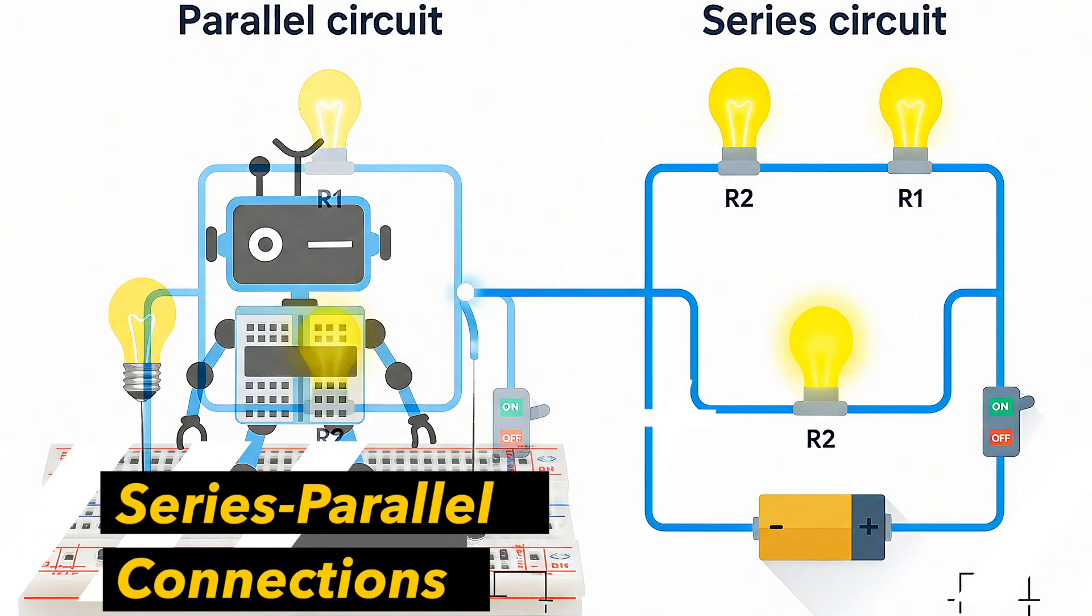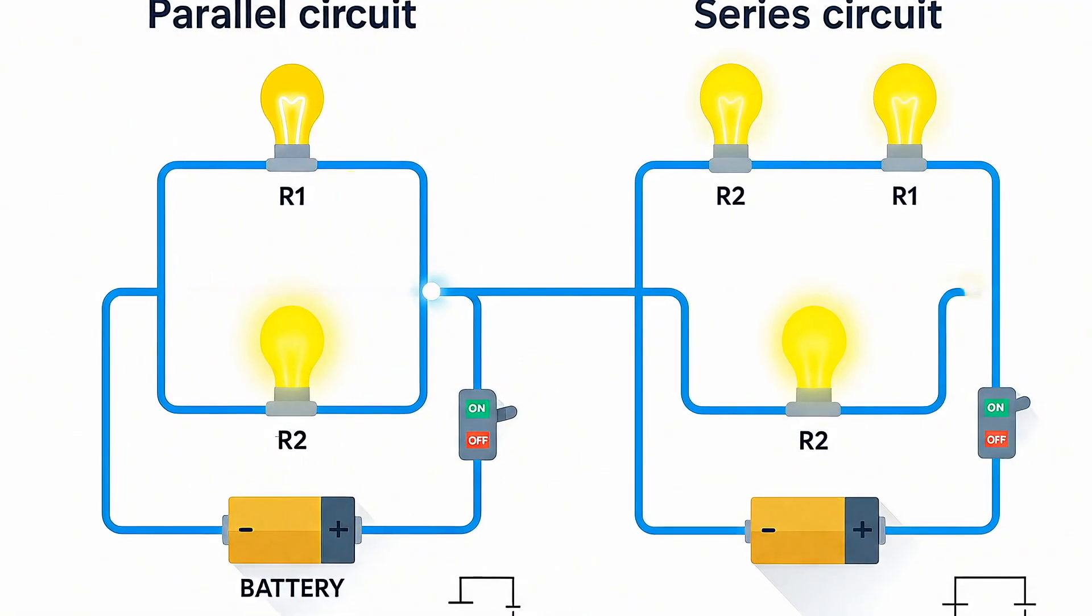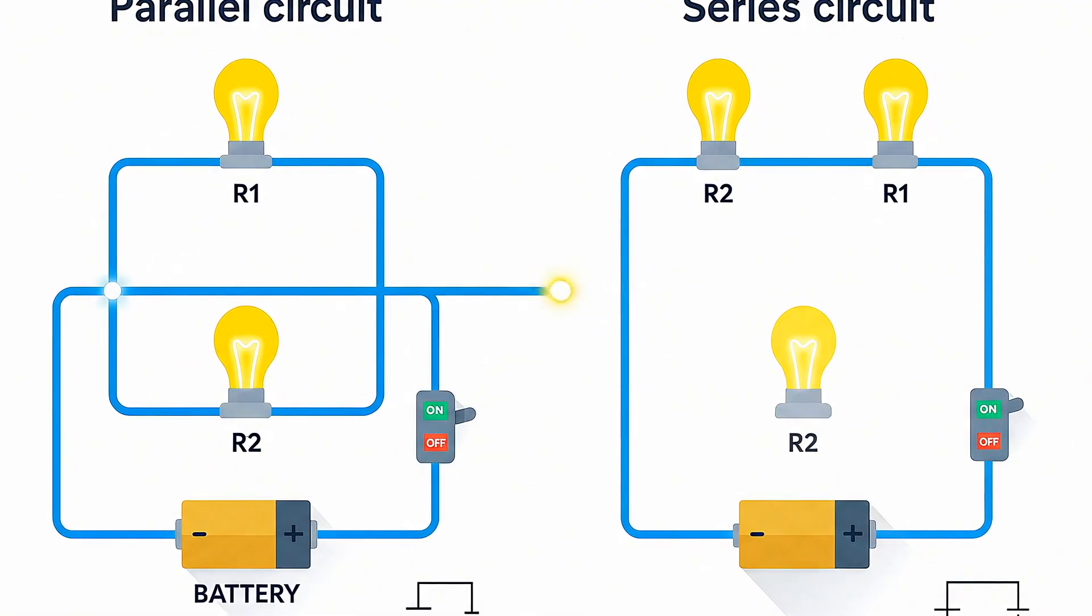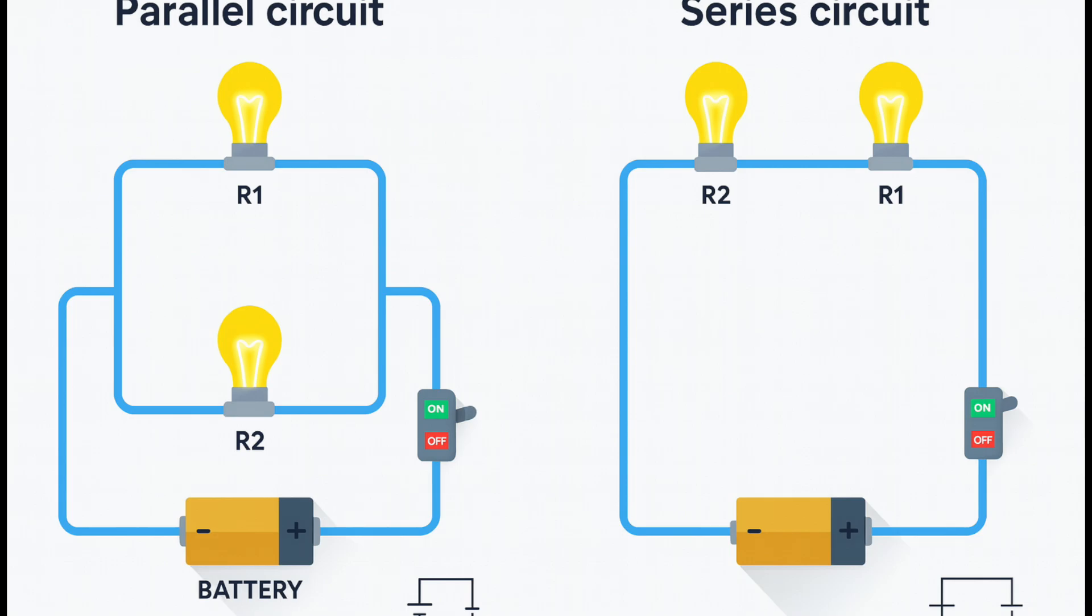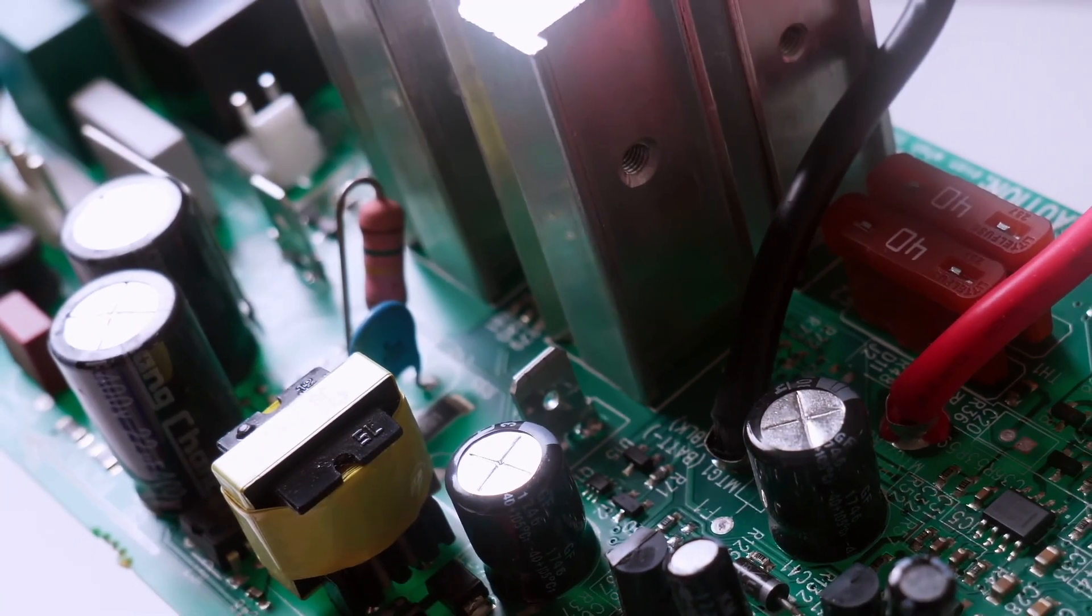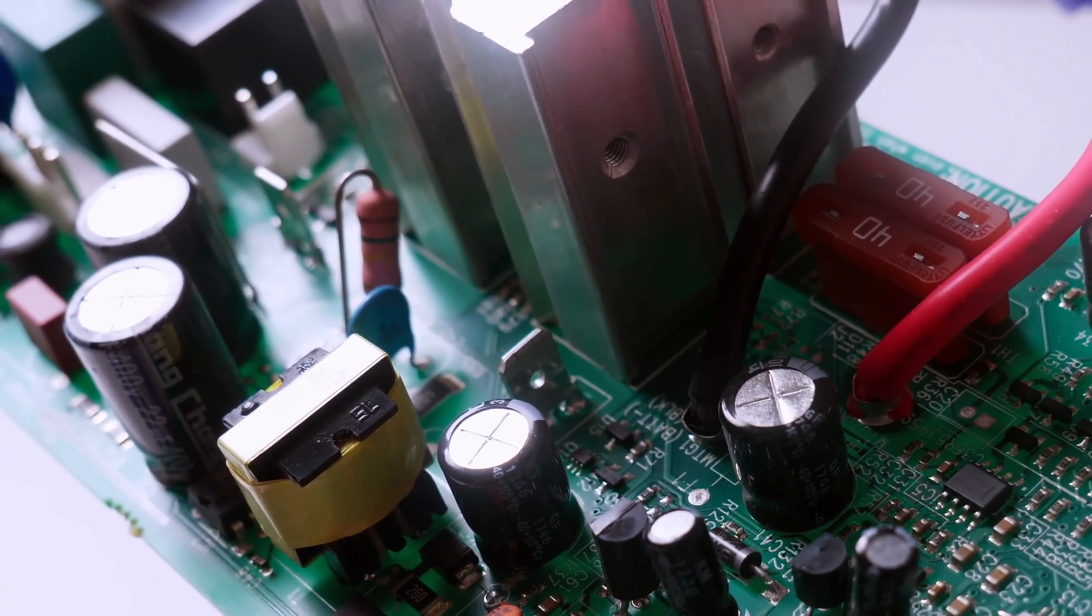Next, you need to understand the different types of circuits: series and parallel. In a series circuit, components are connected end to end, so the current flows through each one sequentially. The key here is that if one component fails, the entire circuit breaks.